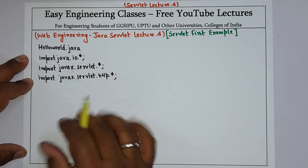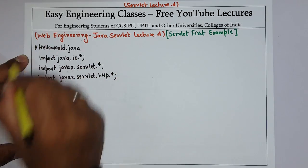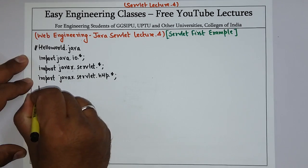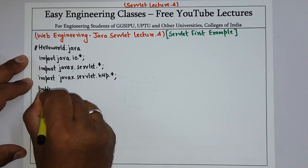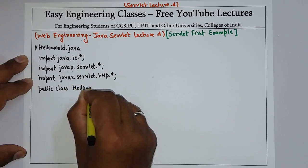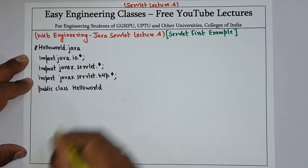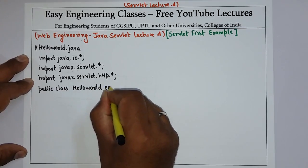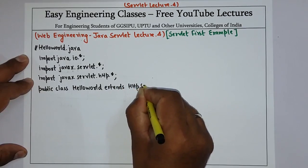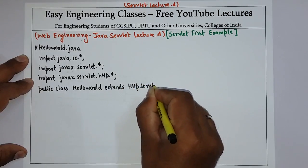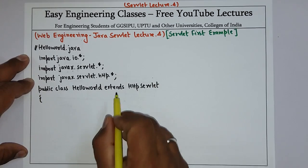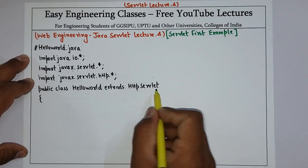So these are the three packages that you need to import. Once the packages are imported, after that you have to create a class. We will create a class with the name HelloWorld, so write: public class HelloWorld. To create a servlet you have to extend the class HttpServlet. By this you have created a class named HelloWorld that extends HttpServlet.